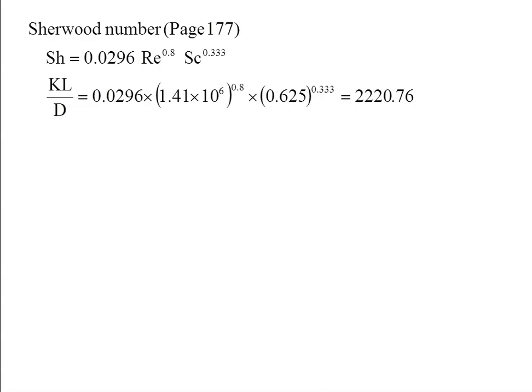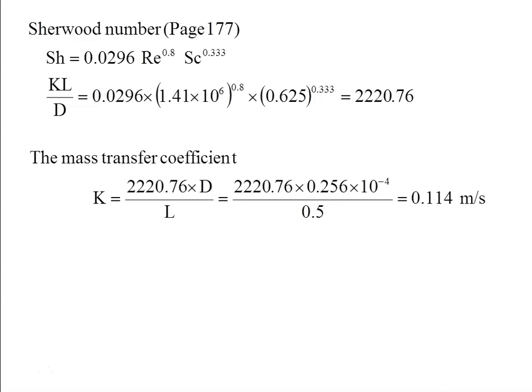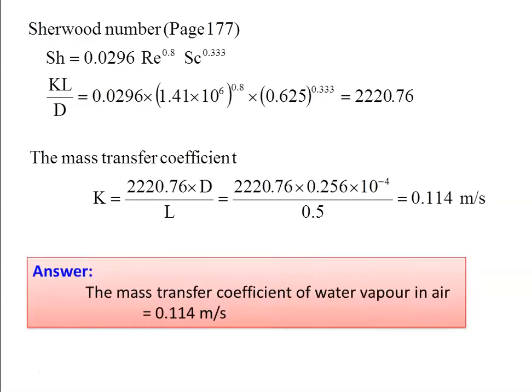Sherwood number for turbulent flow from page 177: Sh = 0.0296 × Re⁰·⁸ × Sc⁰·³³³. Substituting Reynolds number and Schmidt number: kL/D = 2220.76. Mass transfer coefficient k = 2220.76 × D/L = 0.114 m/s. The mass transfer coefficient of water vapor in air is 0.114 m/s.